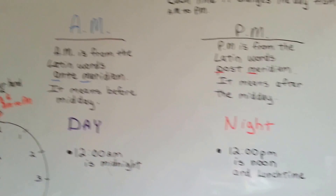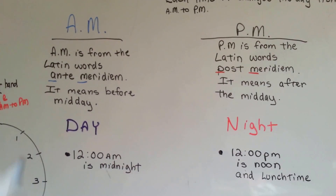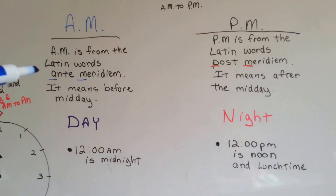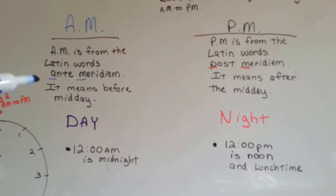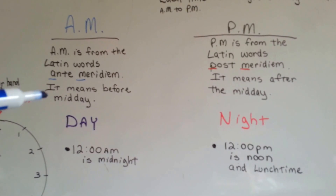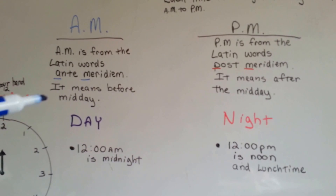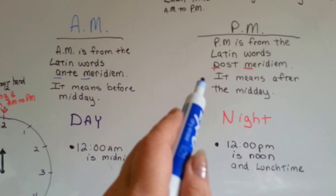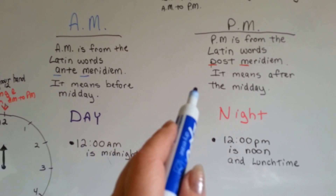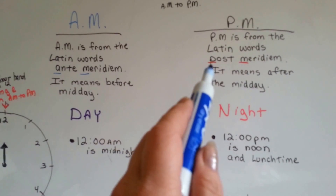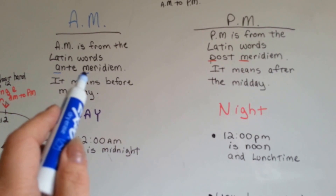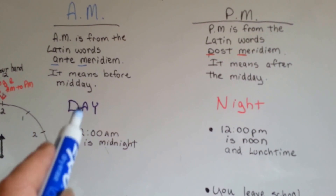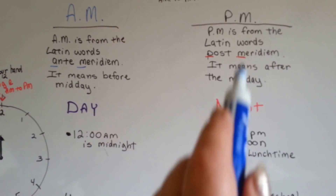So now let's look at a comparison here. This is AM. This is PM. AM is from the Latin words ante-meridiem — it means before midday, like midday is the middle of the day. PM is from the Latin words post-meridiem. It means after the midday. So this is daytime AM and this is nighttime PM.